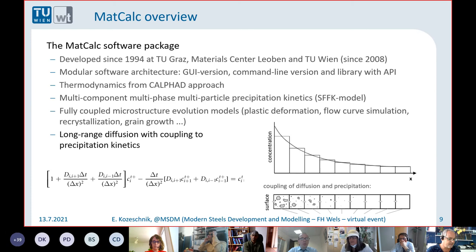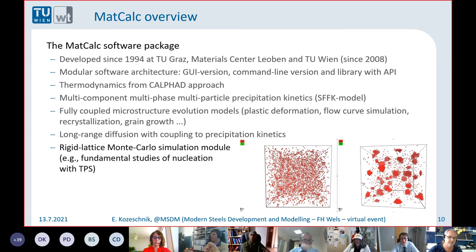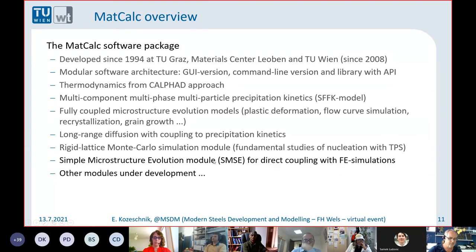For today I want to show an example with the long-range diffusion module — this is the finite difference formulation, a little more on that later. One thing I'm also not able to show is the Monte Carlo simulation module, which we have used in recent years to study the nucleation stage, exactly the nucleation stage with some kind of rare event sampling. Keywords here are transition path sampling and forward flux sampling — statistical physics methods where we learned a lot. We also have a microstructure evolution model that we can couple with finite element simulations.